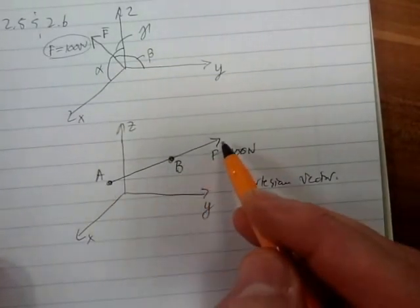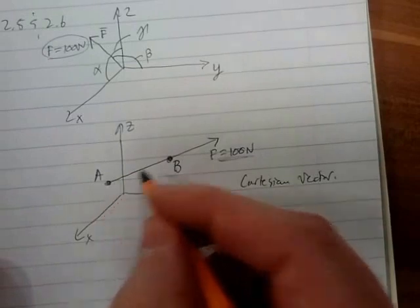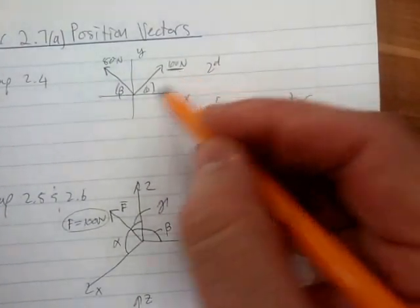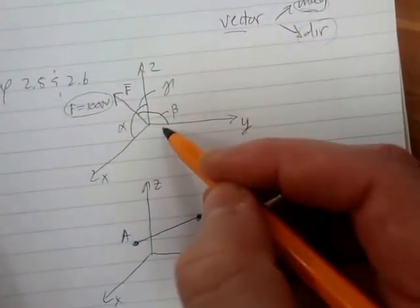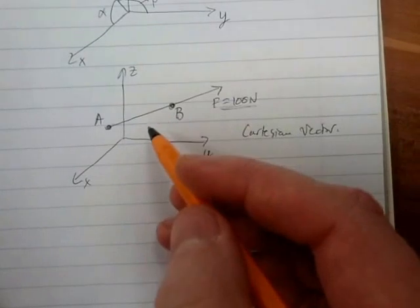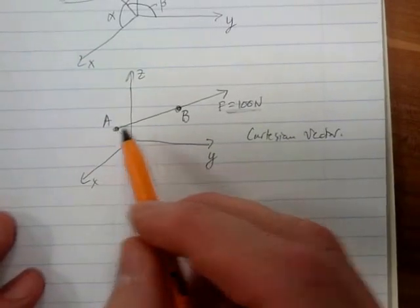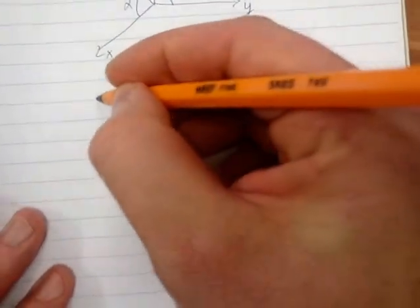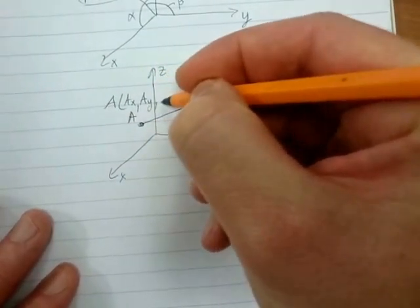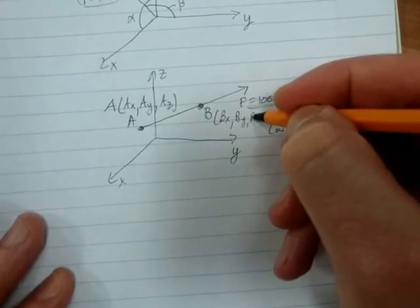If we have a force directed along a line and all we have is the magnitude, we need to use these two points to determine our direction. Whereas before we had magnitudes and angles, here all we have are two points: point A and point B. Point A has three coordinates — Ax, Ay, Az — and B has three coordinates — Bx, By, Bz.